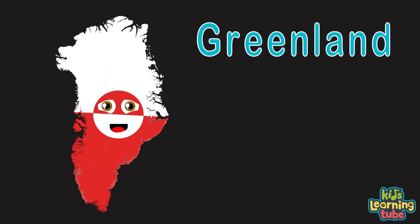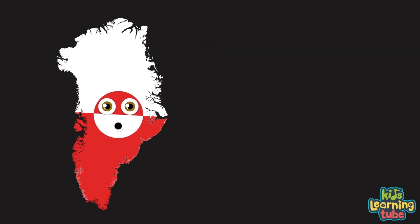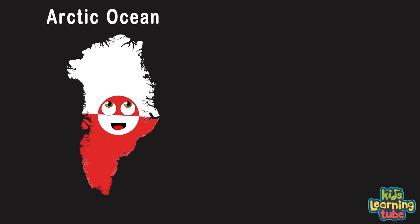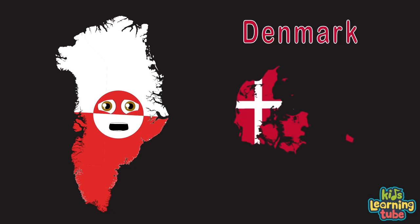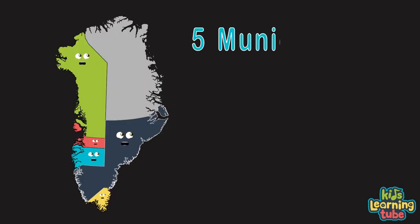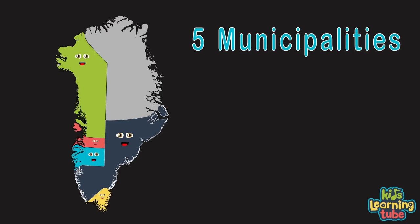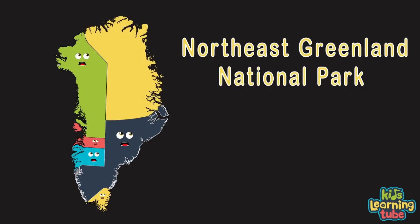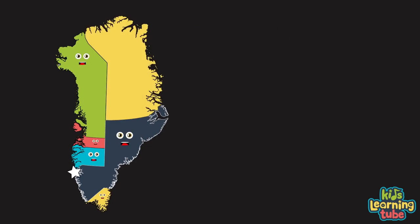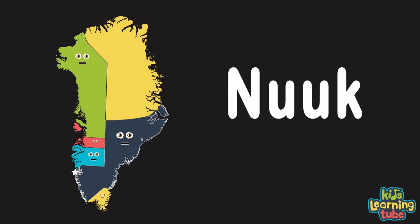My name is Greenland — I am the world's largest island, located between the Arctic and Atlantic Ocean. Some people think I'm a country or sovereign state, but I belong to Denmark as an autonomous territory. We are Greenland's five municipalities. We have the largest national park located in Northeast Greenland. Greenland's capital is Nuuk.